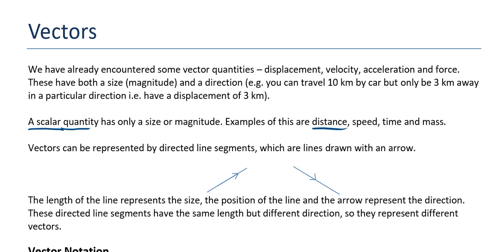Examples of scalars are distance, speed, time and mass, whereas vectors are things such as acceleration, velocity and displacement. They have size and direction.